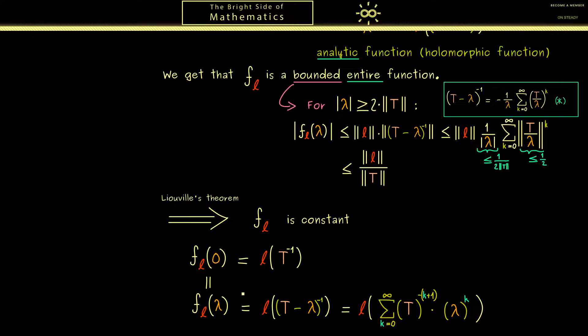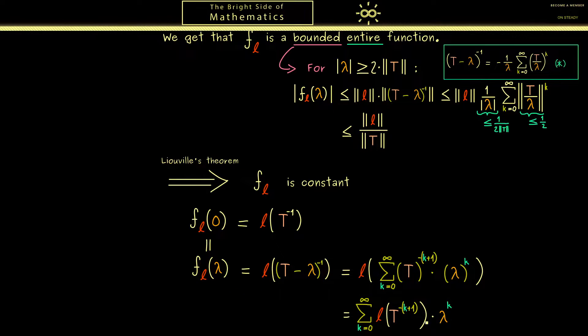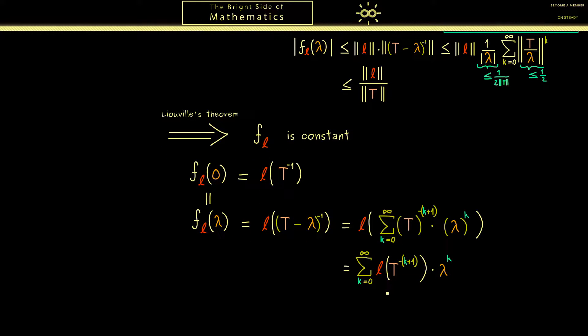Okay, now this is much nicer and now we can pull in l. And of course then we get our Taylor series for f_l. So you see coefficients here and lambda to the power k here. Okay, maybe still a little bit complicated but remember we know the function is constant. Therefore all the coefficients after the term k equals 0 will vanish. Therefore for example the term that corresponds to k equals 1 is 0. So this means l of T to the power minus 2 is 0. And again as a reminder this fact holds now for all linear functionals.